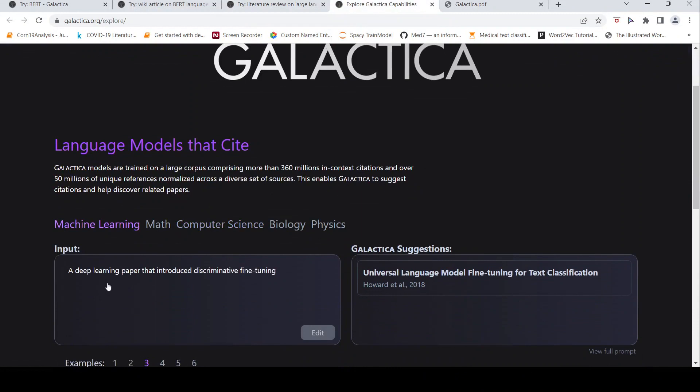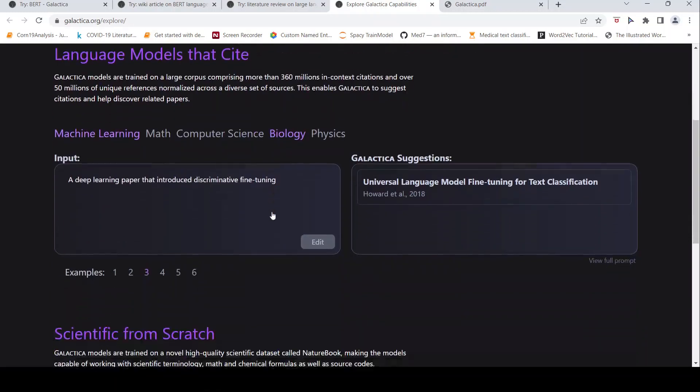It is still generating. We can also explore more capabilities like this. For example, if you give an input like write a deep learning paper that introduced discriminative fine tuning, it gives which paper it is. Or for example, a paper that introduced neural network architecture for recognizing digits, if this is your query, it gives this as results. So you can find out papers using this particular Galactica language model.